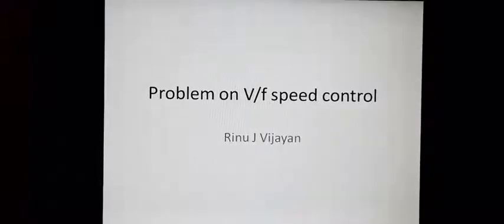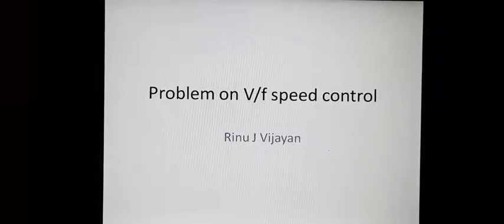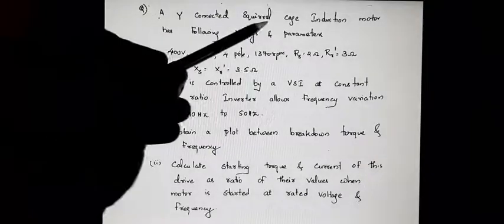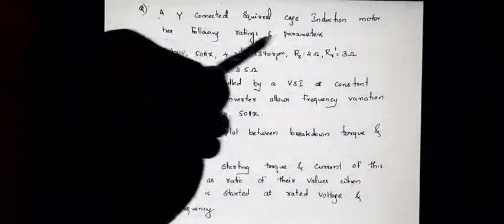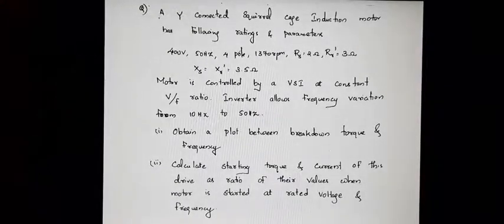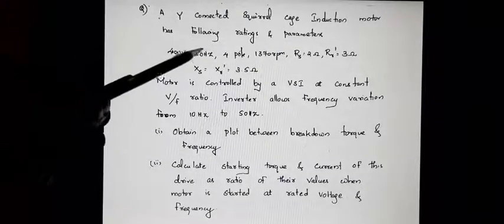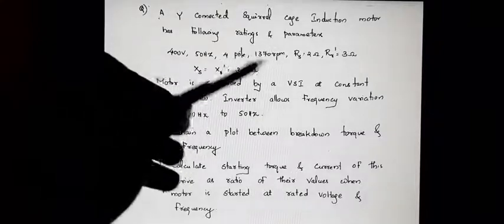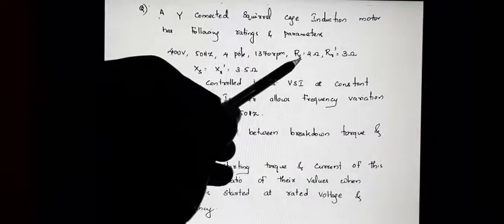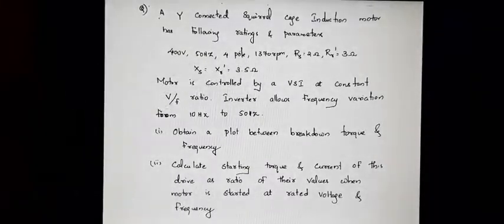Good morning everyone. In today's session we are going to deal with a problem on V/f method of speed control. The question involves a star-connected squirrel cage induction motor with the following ratings and parameters: 400 volt, 50 hertz, 4 pole, and rated speed is 1370 rpm. Equivalent circuit parameters Rs, Rr', Xs, Xr' are also given.